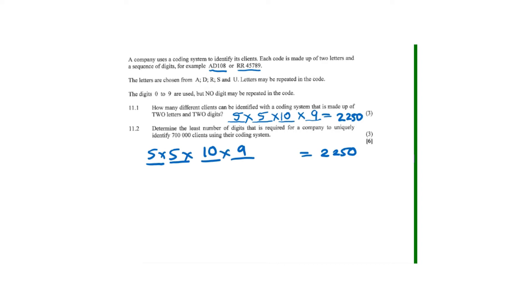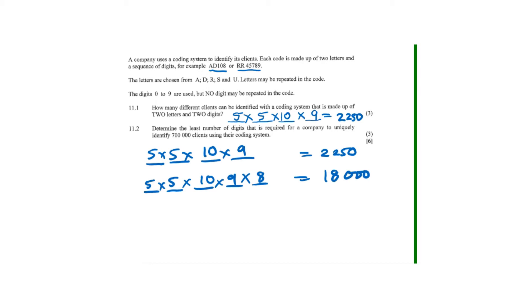Let's try with three digits using trial and error. With two letters (5 × 5) and three digits with no repetition (10 × 9 × 8), we get 5 × 5 × 10 × 9 × 8 = 18,000. That is still way too few — we need to reach 700,000, so three digits is not enough.